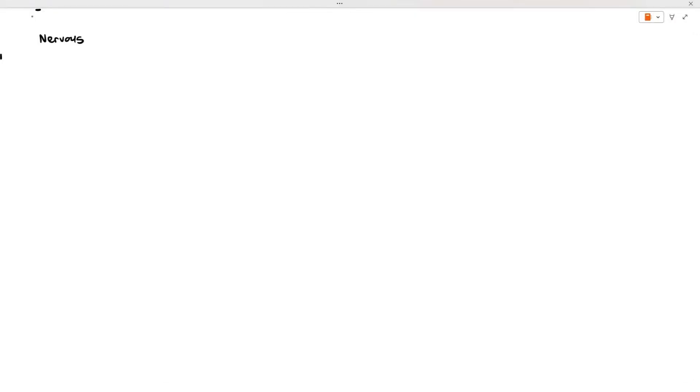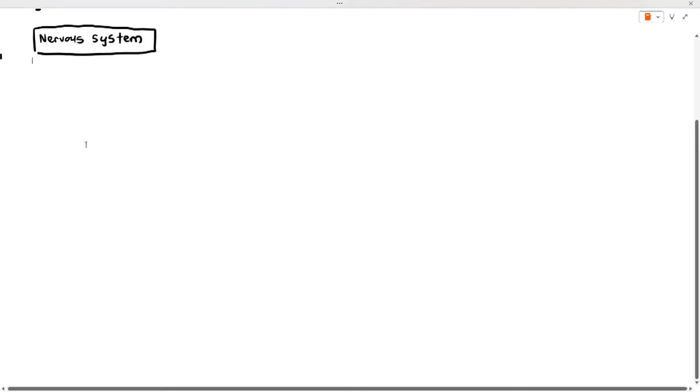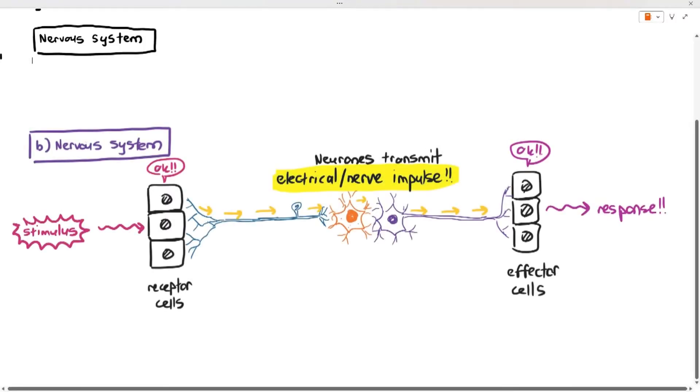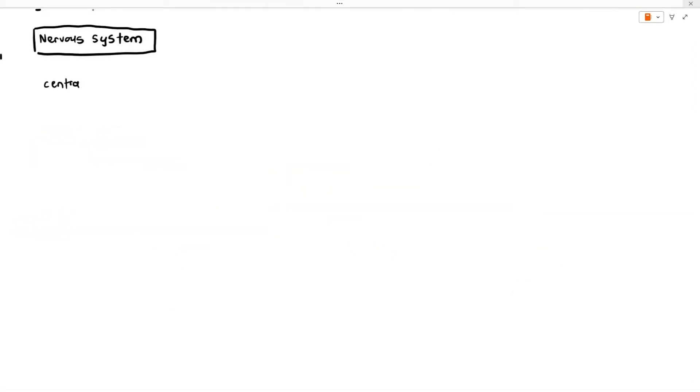In this video, we are going to be looking at the structure of the nervous system. As I mentioned in the previous video, the nervous system is an organ system in our body that transmits electrical impulses from one part of the body to another part of the body, and they do it extremely quickly.